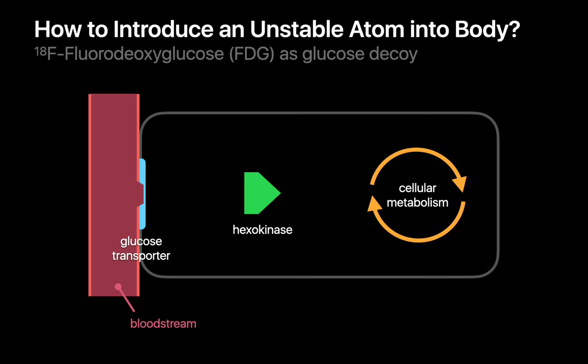Our most common strategy to get radionuclides into the body relies on using a decoy that looks just like glucose to the cell. The decoy is a glucose molecule that simply had one of its hydroxyl groups replaced by an unstable fluorine-18 atom. Fluorine-18 atoms have an excess of protons, but can achieve stability by allowing a proton inside their nucleus to emit a positron and become a neutron. We call this decoy molecule fluorodeoxyglucose, or FDG for short.